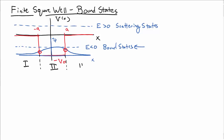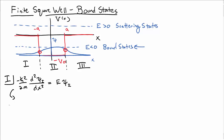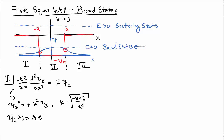Let's label the regions 1, 2, and 3 as such and solve Schrödinger's equation in each. For region 1, Schrödinger's equation — labeling psi 1 in that region — equals E psi. Recall that E is less than zero. So when I move the constants over, I get the double derivative of psi is equal to plus k-squared psi 1, where k is the square root of this positive number. So k is a real number here, even though there's a minus sign in there.